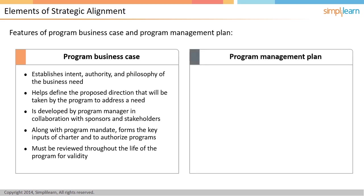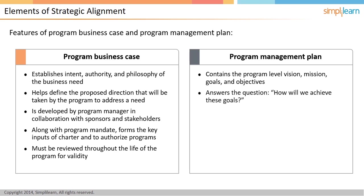Next, we will understand the program management plan. The program management plan provides the program-level vision, mission, goals, and objectives. These are derived from the charter and are the mandate given to the program. The plan answers the question: how are we going to achieve these goals? The program management plan should set up measures that enable us to track whether and to what extent the program has succeeded in meeting the organization's strategic objectives.